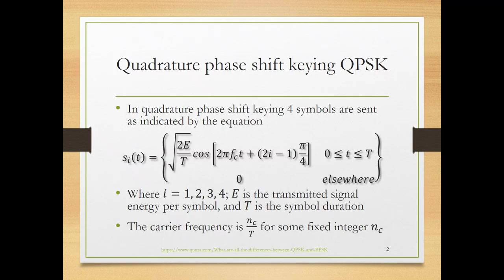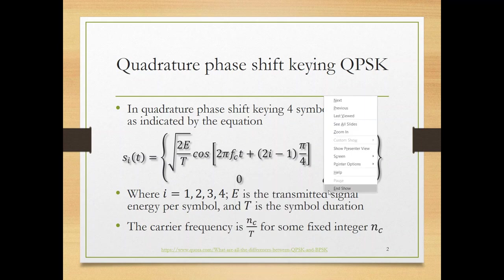In quadrature phase shift keying we have four possible symbols that we can transmit over the medium, instead of only two as in binary phase shift keying. The waveform can be written as: s_i(t) = sqrt(2E/T) × cos(2πf_c·t + φ_i), where the phase φ_i depends on the symbol being transmitted, and each symbol carries two bits.